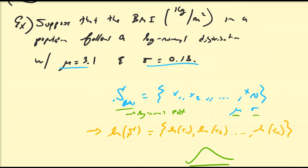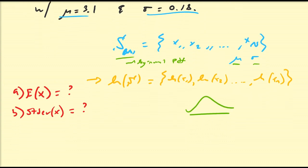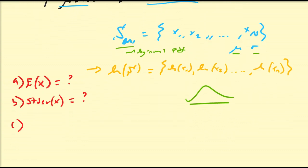So if we were to randomly select a person from the population, what would be the expected BMI? What would be the standard deviation of the BMIs in the entire population? And also, what is the probability that a randomly selected person from this population has a BMI between 18 and 27? Let's go to Desmos and work all these things out.